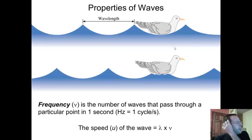Properties of waves. Here's our little seagull kind of between two crests. As the waves move, it's frequency as a crest moves past our bird. Frequency is the number of waves that pass through a particular point in a given second. Frequency is given the Greek symbol nu, which looks like a V but is really the Greek symbol nu.